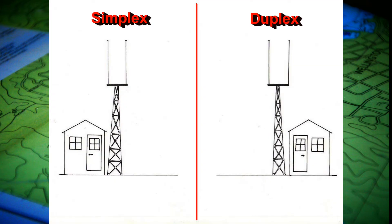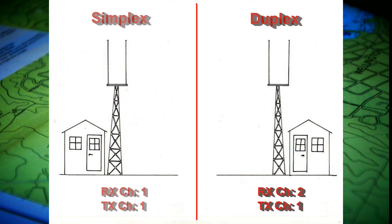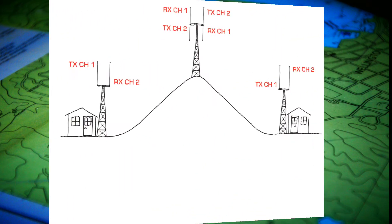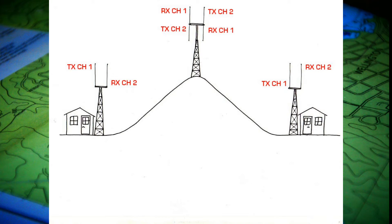When you change your radio over to duplex mode, you're changing your radio from receiving and transmitting on the one frequency to now receiving on one frequency and transmitting on another. In this case, our radios will be transmitting on channel 1 and receiving on channel 2.